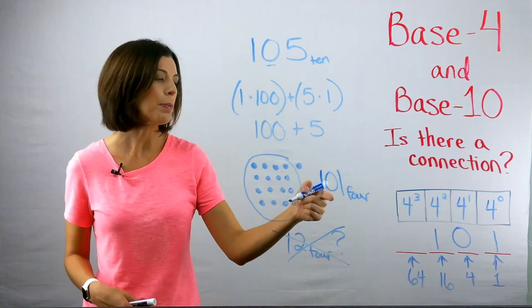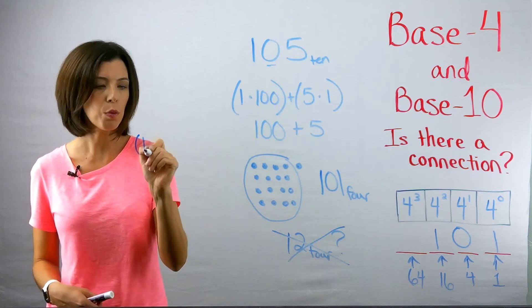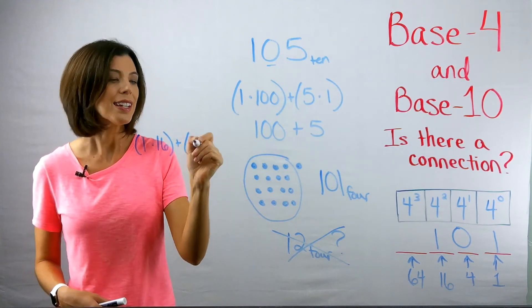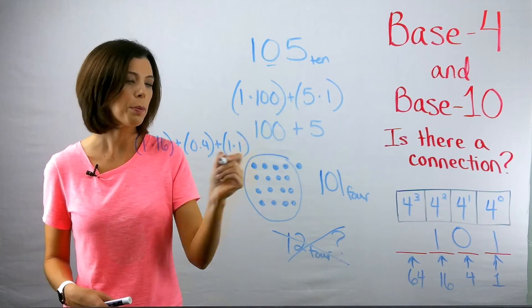Now thinking about expanded notation in base four versus base 10, what would that look like? Again, I would have one group of 16 plus zero groups of four plus one group of one.